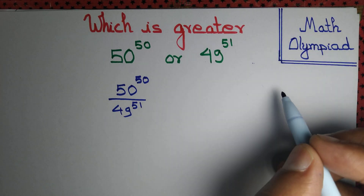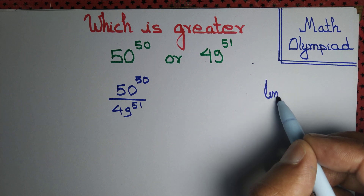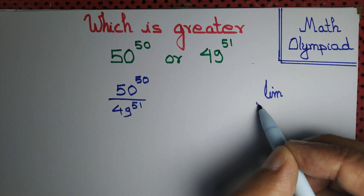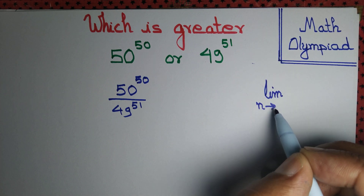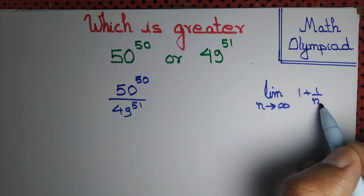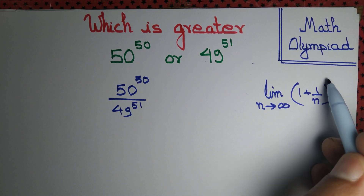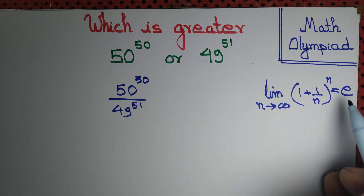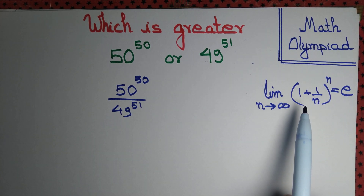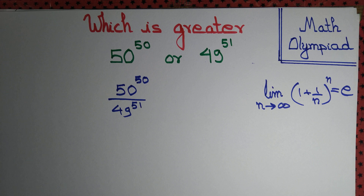This question has something to do with calculus. If you remember, the limit as n tends to infinity of (1 + 1/n)^n equals e. Let's see how this limit is related to this question.